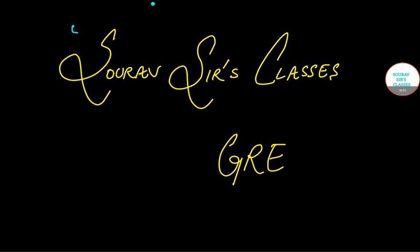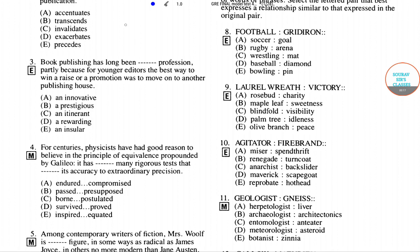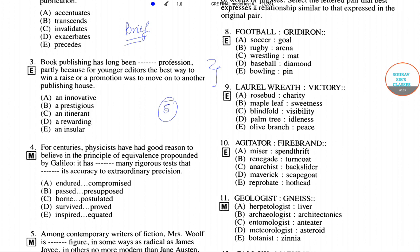Hello and a very warm welcome to this GRE tutorial. Today's focus will be on Section 1. Before starting, let me brief you on what we are going to do today. We will be provided with a sentence that may contain one or more blanks, along with a set of five options. Given the requirement of the sentence, we have to choose the most appropriate option to fill the blank.